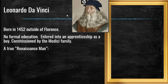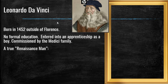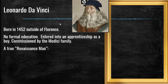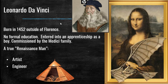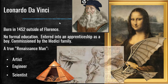Our next Renaissance artist is Leonardo da Vinci. He was born in 1452 outside of Florence. He had no formal education, but he would enter an apprenticeship as a boy. He too was commissioned by the Medici family to create works of art. He was a true Renaissance man, which means he became a master in many different skills. He was an artist — the Mona Lisa is one of his most famous pieces of art. But he was also an engineer who drew many designs for inventions, and he was a scientist who did many anatomical studies of the human body in his lifetime.